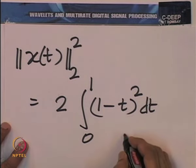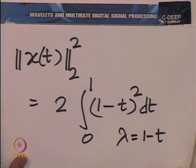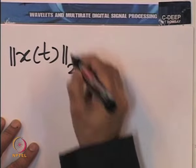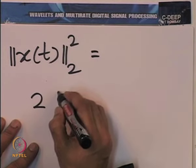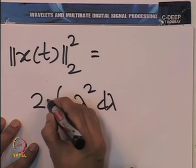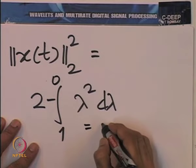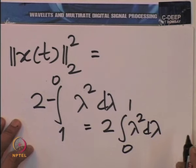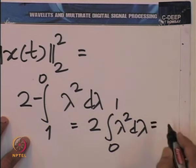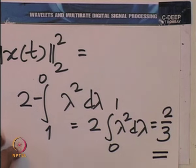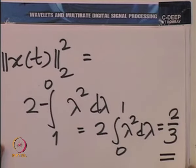We can easily make the substitution lambda = 1 minus t and evaluate the integral. That gives us the norm of x(t) in L2(R) squared equal to 2/3. This is lambda squared, and d lambda is minus dt. So we can write minus d lambda, and the limits also change from 1 to 0, giving us 2 times the integral from 0 to 1 of lambda squared d lambda. This evaluates to 2 times lambda cubed over 3 from 0 to 1, which is 2/3.